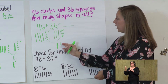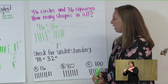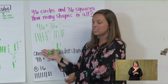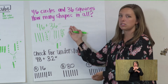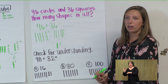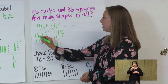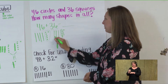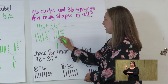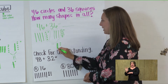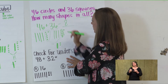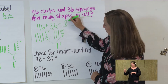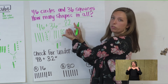I drew one rod and two cubes for the number 12. Now we're going to count by tens for our rods because we have to add our tens and our ones to get our sum. When we count our rods, we count by tens: 10, 20, 30, 40, 50, 60, 70, 80. So we know our 8 is going to go in our tens place, and we can't forget about our ones: 1, 2. I have 82 for our sum.